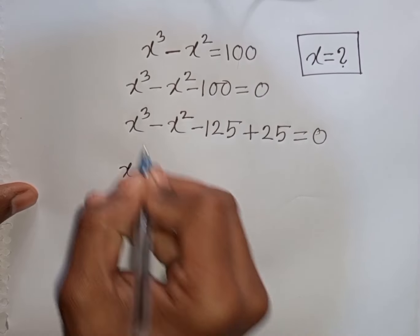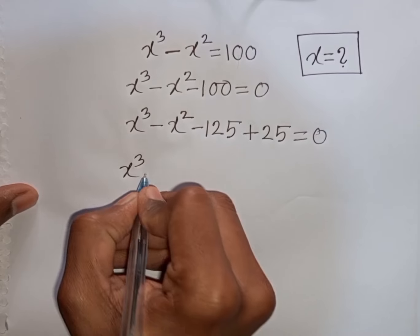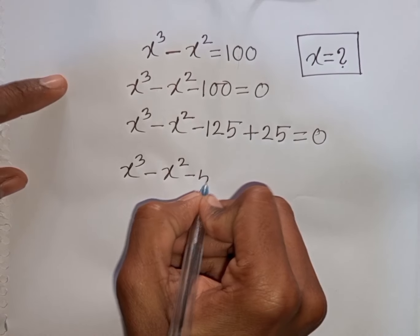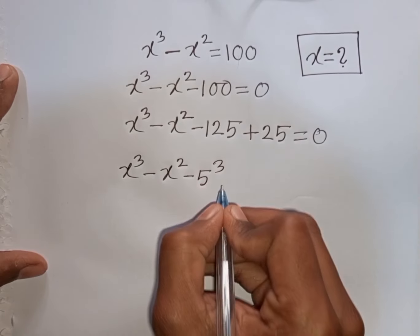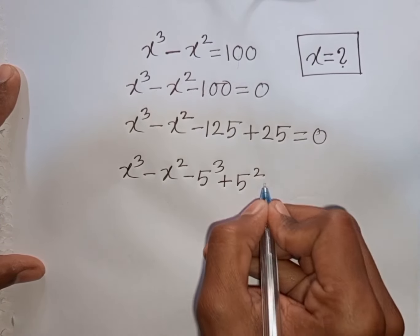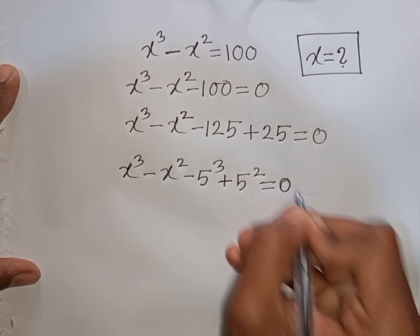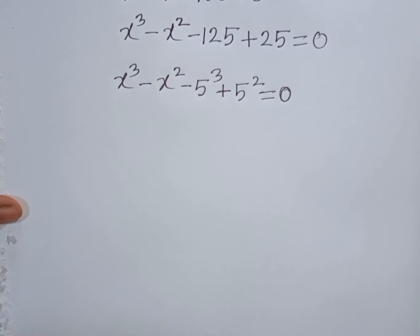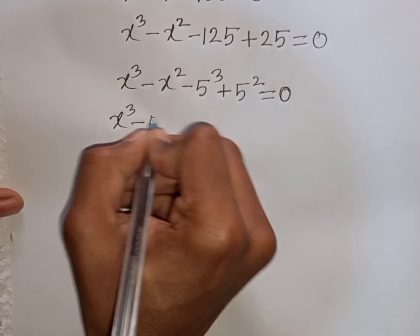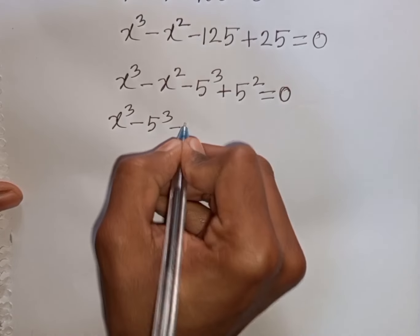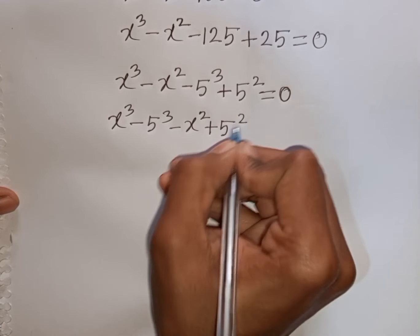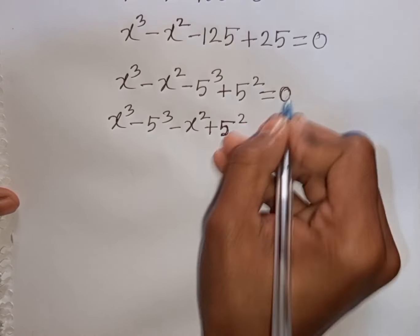Now we have x cubed minus x squared. Then minus 125 can be written as minus 5 cubed. Then plus 25 is the same as plus 5 squared. Then equal to 0. So we can write x cubed minus 5 cubed, then minus x squared plus 5 squared, equal to 0.